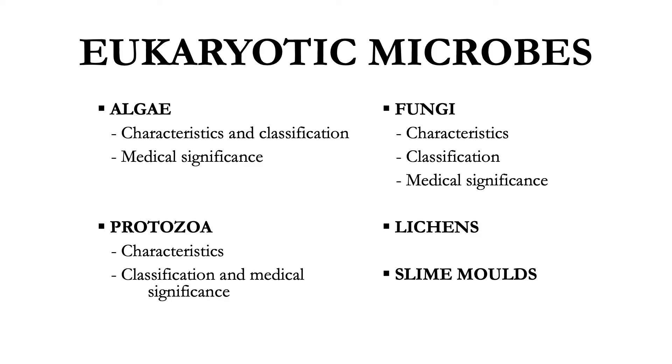Eukaryotic microbes include some species of algae, all protozoa, some species of fungi, all lichens, and all slime molds.